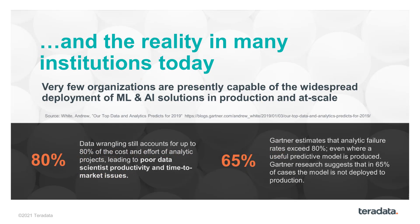I'm picking out two specific points from Gartner Research. The first is that 80% of the time in any project is spent on data wrangling. In that term, they're including all of those first phases of the CRISP-DM project — the business understanding, the data understanding, picking the right data, and doing the feature engineering. It's a huge amount of time spent on that part of the process.